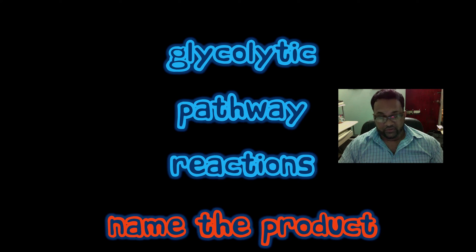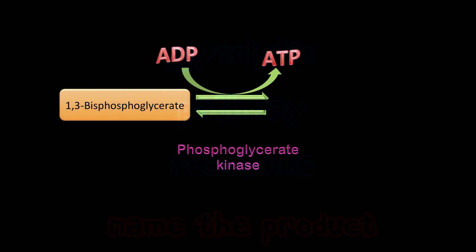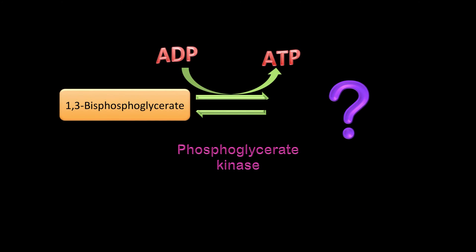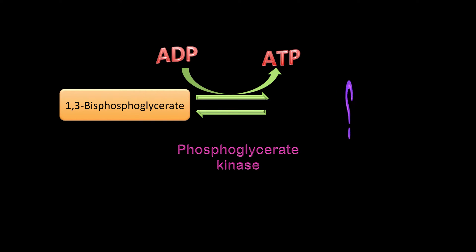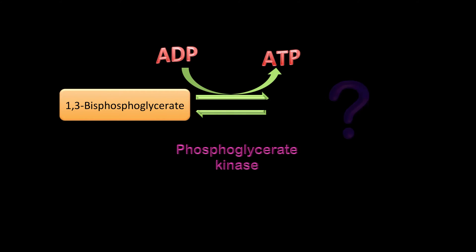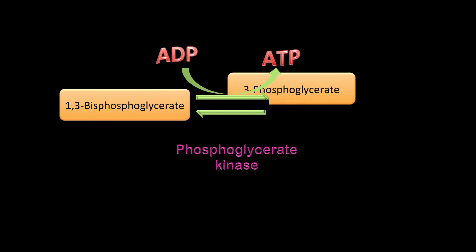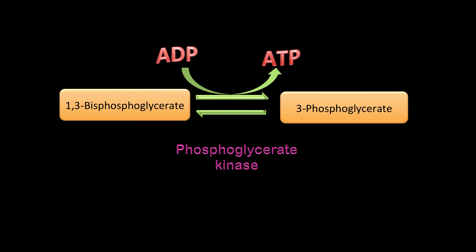I should warn you it's not in order, so let's get started. The first one: you have 1,3-bisphosphoglycerate, the enzyme is phosphoglycerate kinase — what is the product? You should have said 3-phosphoglycerate.